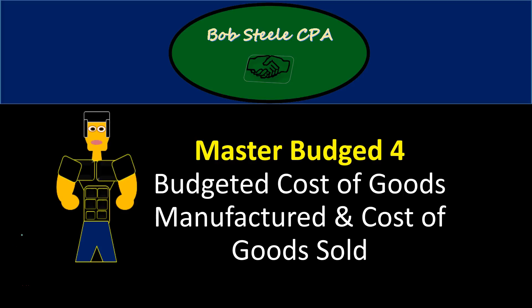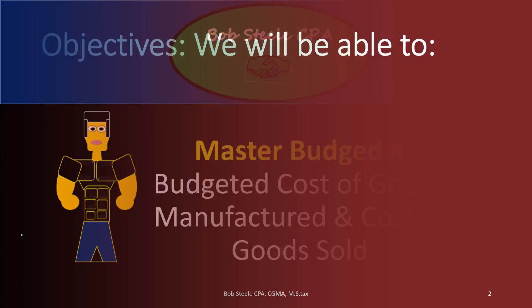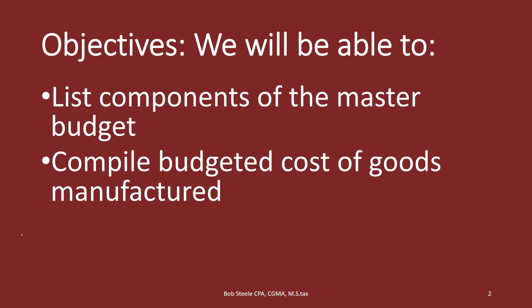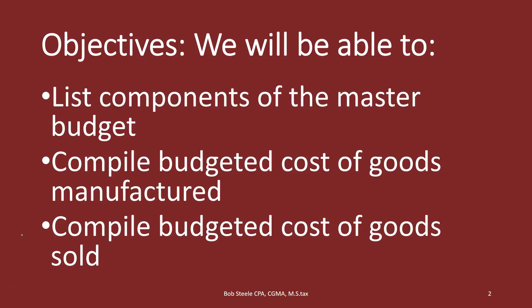Hello, in this lecture we're going to continue with the Master Budget Part 4. If you haven't looked at the previous three parts, take a look at those. We'll be continuing in Part 4 with the Budgeted Cost of Goods Manufactured and Cost of Goods Sold. We will be able to, at the end of this, list components of the Master Budget, compile Budgeted Cost of Goods Manufactured, and then compile the Budgeted Cost of Goods Sold.